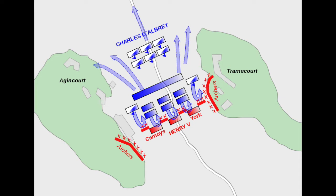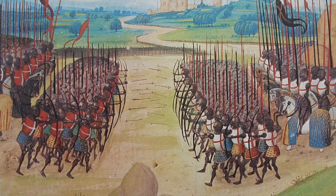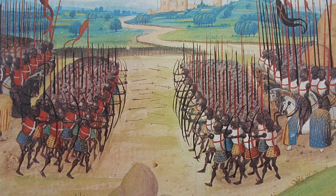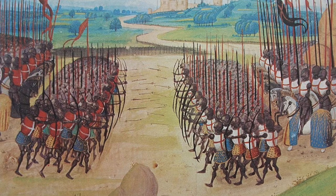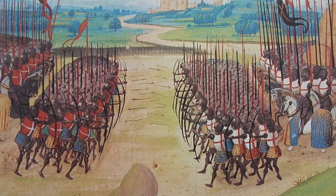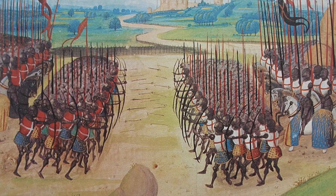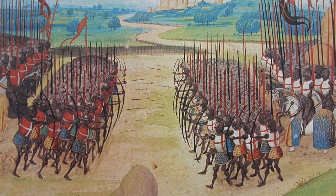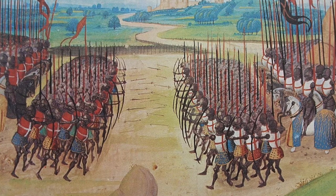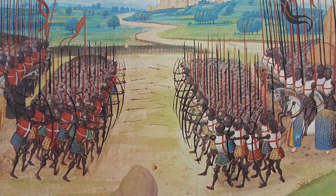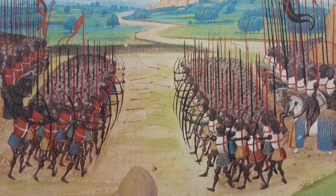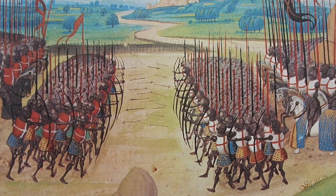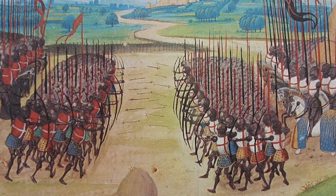Estimates of up to 80% of that 7,000-strong English force were longbowmen. During the fighting, Henry V's brother Humphrey, the Duke of Gloucester, had been wounded, and Henry himself stood guard over his brother's body until he could be dragged to safety — a sensational act of bravery, particularly when Henry received an axe blow to his head, which knocked off part of his helmet. Nevertheless, he lived to tell the tale, as did the majority of the English forces.